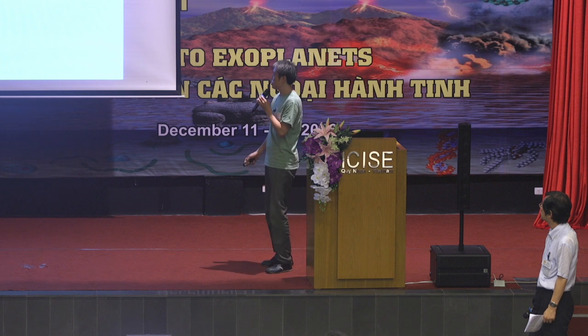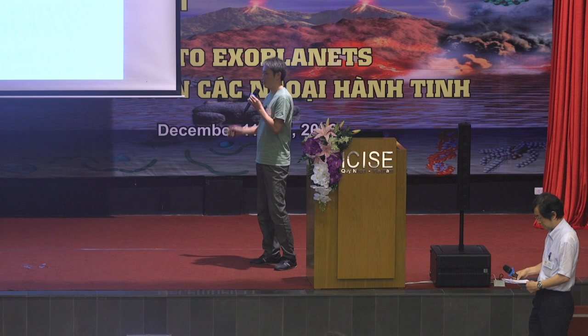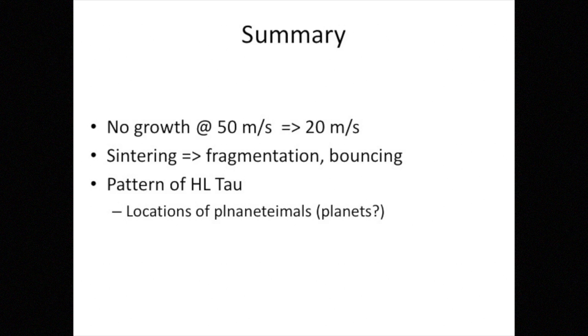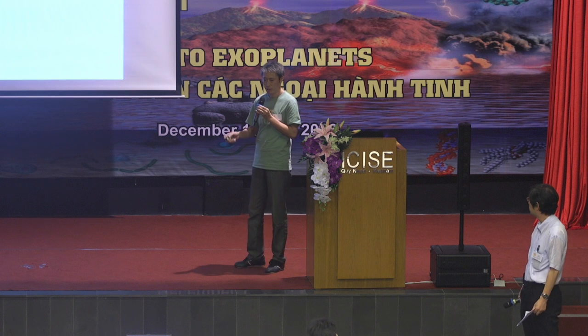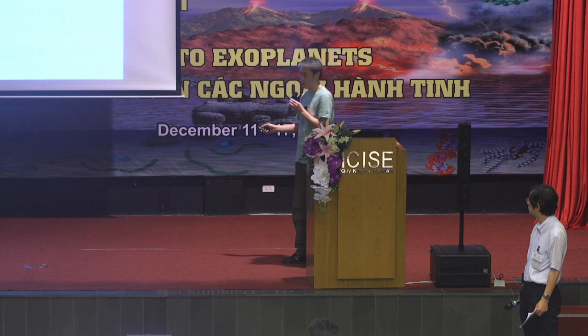And this is a summary of my talk. So by numerical simulation, I showed that the growth of an icy aggregate is impossible at 50 meters per second. And instead, the maximum velocity reduces to 20 meters per second. And another important result is bouncing if the aggregate is compacted. And the sintering region might explain the symmetric pattern of HL Tau. So this suggests the sintering affects the locations of planetesimals and maybe planets. Thank you.